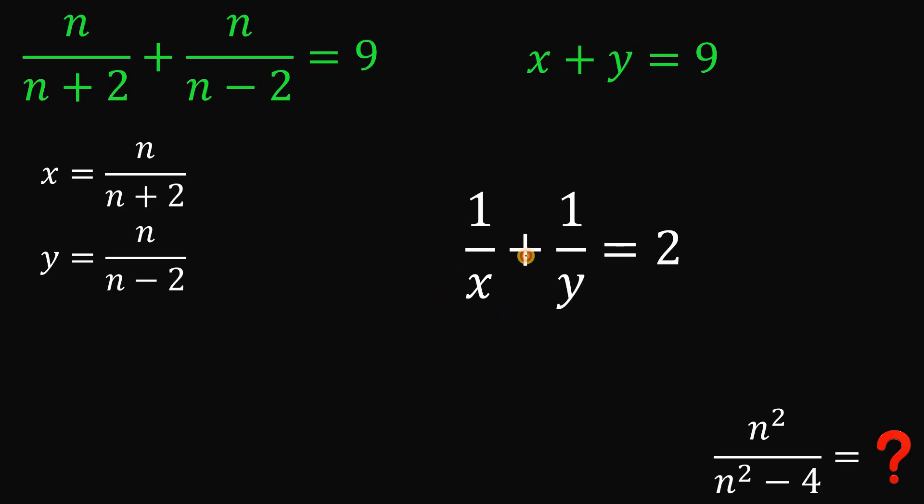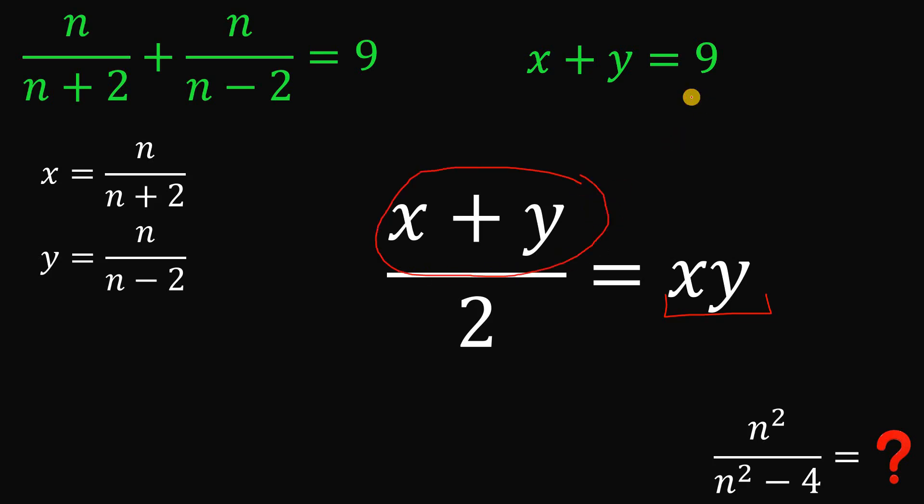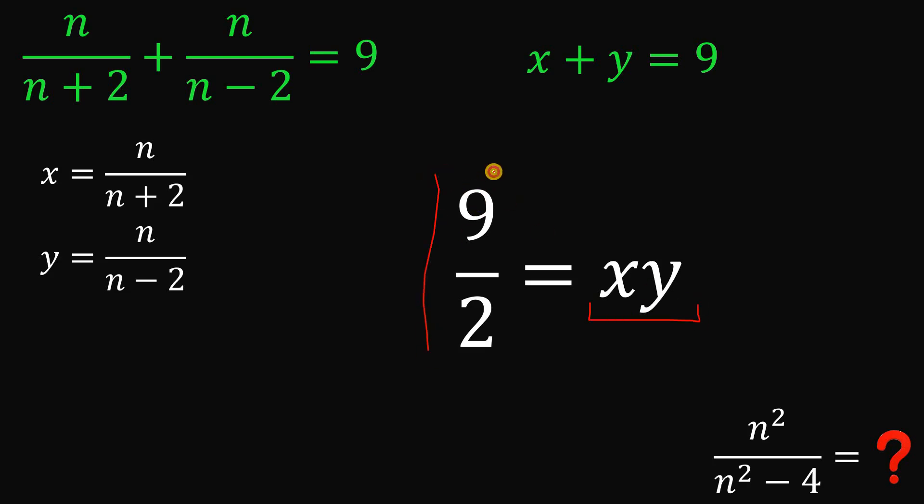If we simplify, 1 over x plus 1 over y, this will give us x plus y over x times y. What we're going to do is to rearrange some terms a little bit. This will give us x plus y over 2 equals x times y. X plus y, we have the value for this. We have 9. So, x plus y must be equal to 9. We can replace this with 9. X times y equals 9 over 2.